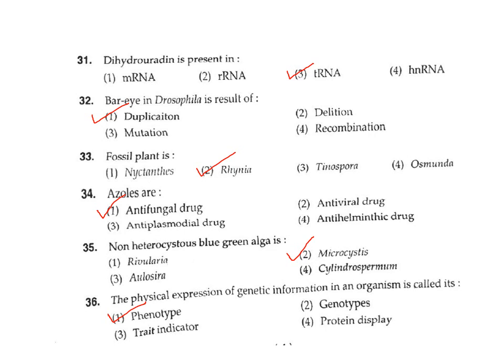Question 33: What is a fossil plant? The fossil plant here is Rhynia, Option 2. Question 34: What are azoles? Azoles are chemical compounds used as anti-fungal drugs. Correct answer Option 1. Question 35: Which is a non-heterocystous blue-green alga? The blue-green alga that does not have heterocysts is Microcystis.